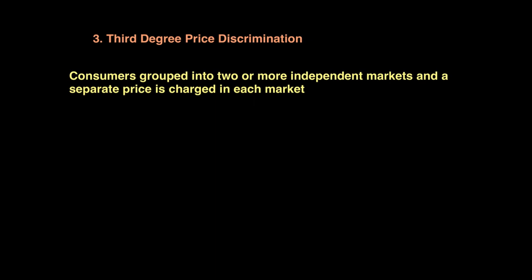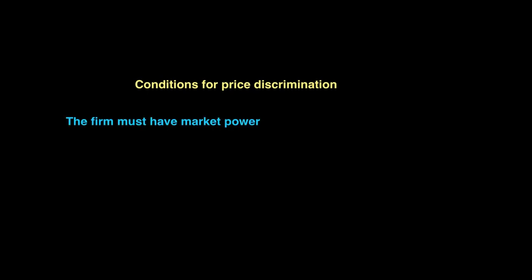There are three conditions necessary for price discrimination to take place. The first is that the firm must have market power. Price discrimination is not possible in a perfectly competitive market where no seller can charge other than the going market price. Price discrimination can only occur when firms can vary the price — in other words, when the firm faces a downward-sloping demand curve, not a perfectly elastic one.